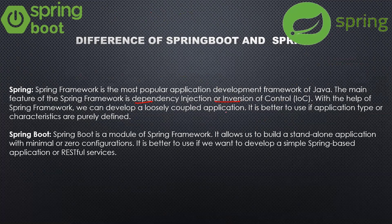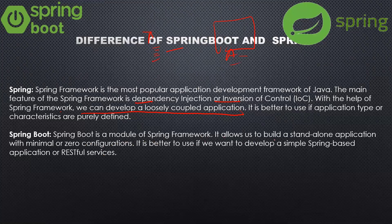With the help of Spring and Inversion of Control, we can develop loosely coupled applications — meaning your application is not tightly coupled. The creation of objects is externalized to the application context. Spring Boot is a module of the Spring framework that allows building standalone applications with minimum or zero configuration.